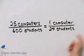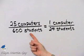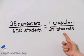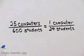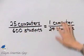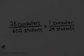Notice this is a proportion — it's a ratio or rate equal to a ratio or a rate. So it definitely is a proportion. Make sure you understand how each of these were set up according to the sentence.